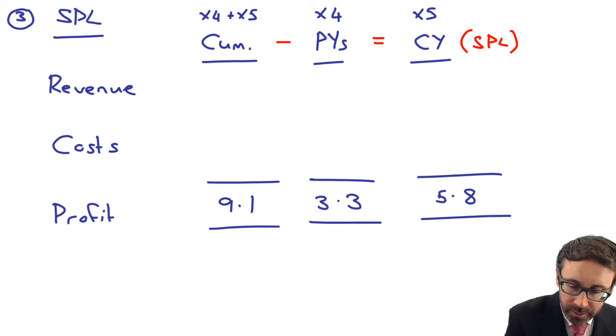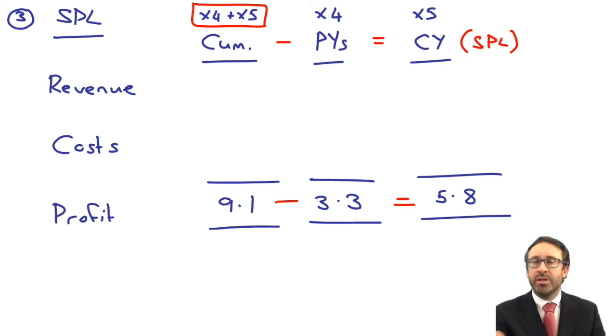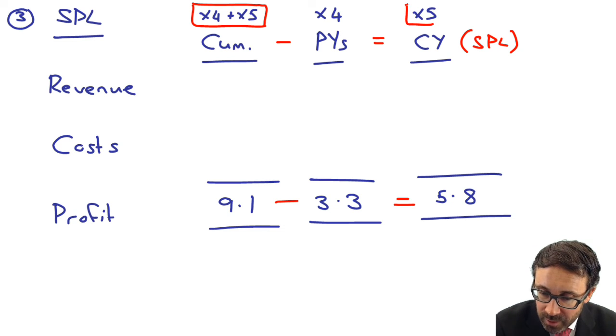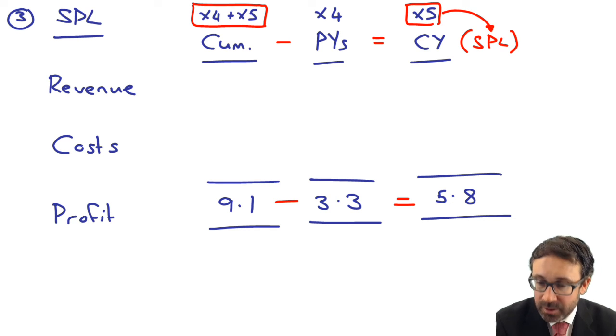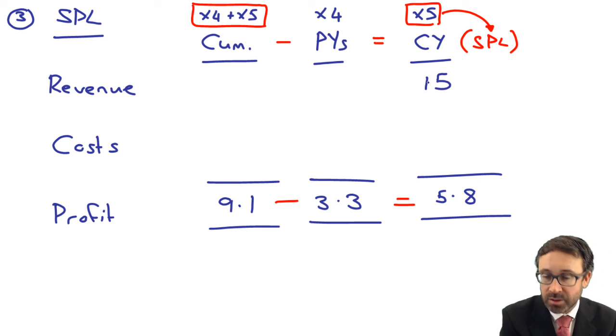All I've gone through and done is the 9.1 less the 3.3 gives me the 5.8, because what we calculated in terms of the profit recognition at 70% was everything in total for X4 and X5. So we've seen or we've been given what happened in X4. We just want X5 so that that can then feed in to the statement of profit or loss. So therefore, we're showing 5.8 million. How much revenue are we going to recognize? Well, that's going to be based upon my work certified, which is the 15 million.